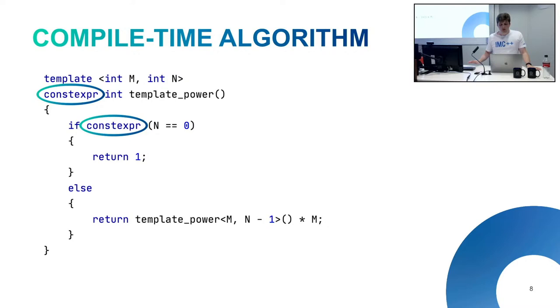So if I have a program that uses a vector of ints, a vector of strings, and a vector of pointers, then at compile time I'll generate all three of them, and there'll be three entirely separate classes that don't have anything to do with each other except that they look the same.